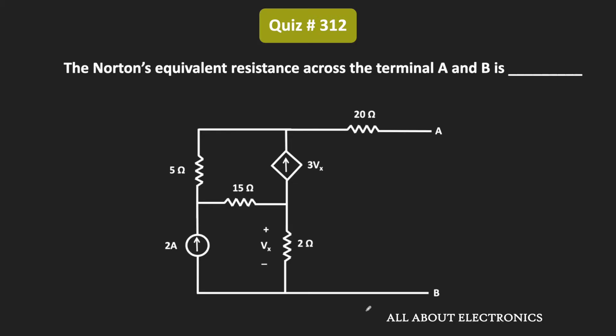Hey friends, welcome to the YouTube channel All About Electronics. In this question, we have been asked to find the Norton's equivalent resistance which is seen across the terminals A and B.